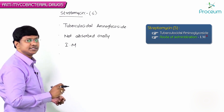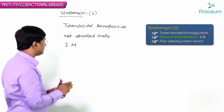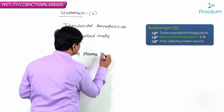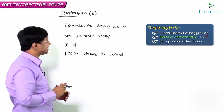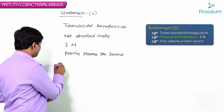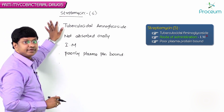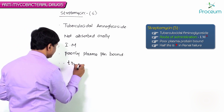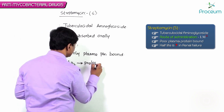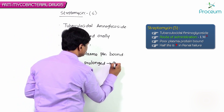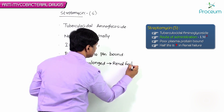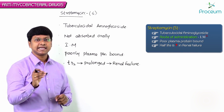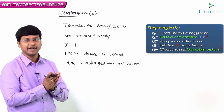Streptomycin is a poorly plasma protein bound drug. The half-life of streptomycin is prolonged in renal failure.